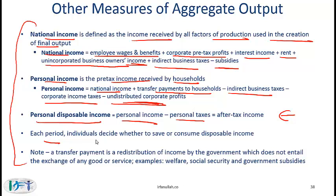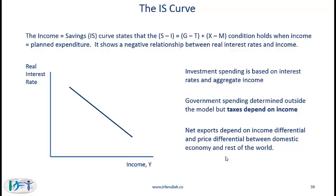Each period, individuals decide whether to save or consume disposable income. A transfer payment is a redistribution of income by the government which does not entail the exchange of any good or service — examples are welfare and social security. Now coming to everybody's favorite topic: the IS curve, the LM curve and the aggregate demand curve. If you haven't already understood these items, it's not worth spending too much time because it is just one learning objective out of hundreds, and the probability of being tested on this is comparable to any other. The effort is high and the potential return is low.